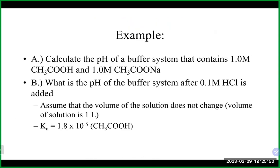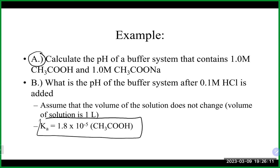Let's talk about buffer calculations and how to approach them. For Part A, calculate the pH of a buffer that is 1 M acetic acid and 1 M sodium acetate, with a Ka value for acetic acid of 1.8 × 10⁻⁵. Work on Part A for a few minutes, and then we'll talk about Part B together.